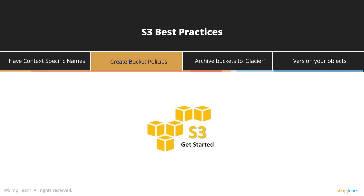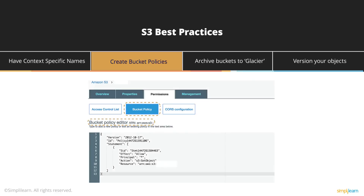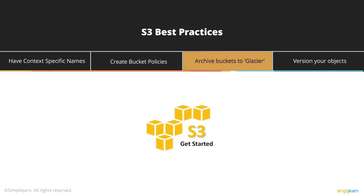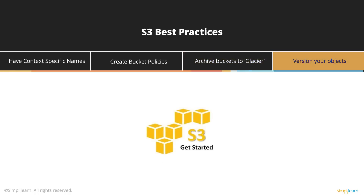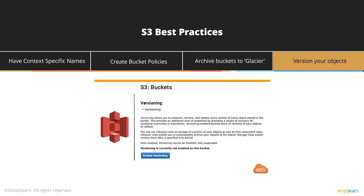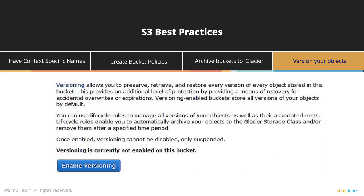You should make sure you have bucket policies for buckets accessible by other users — these policies can be generated using the policy generator or created as fine-grained custom policies. For buckets that are large and contain tons of data, you should archive them to Glacier, which provides very cheap storage, although there is a retrieval time associated with it. If you have critical objects in a bucket, you should enable versioning so you can go back to a previous version of that object and never lose any important version.